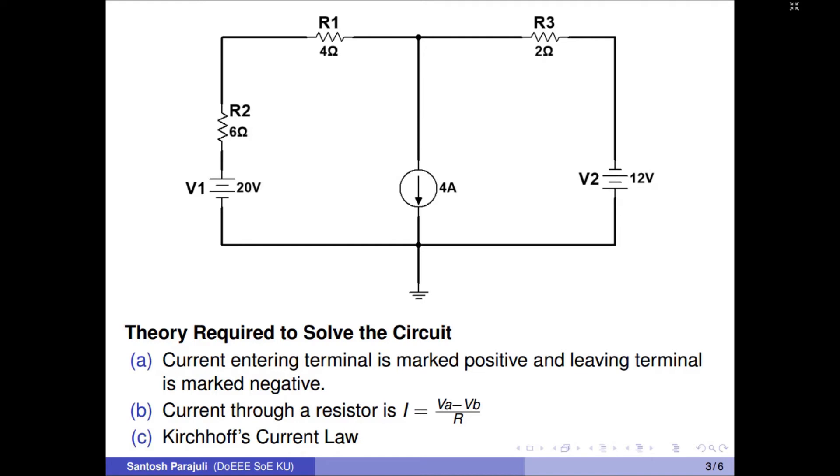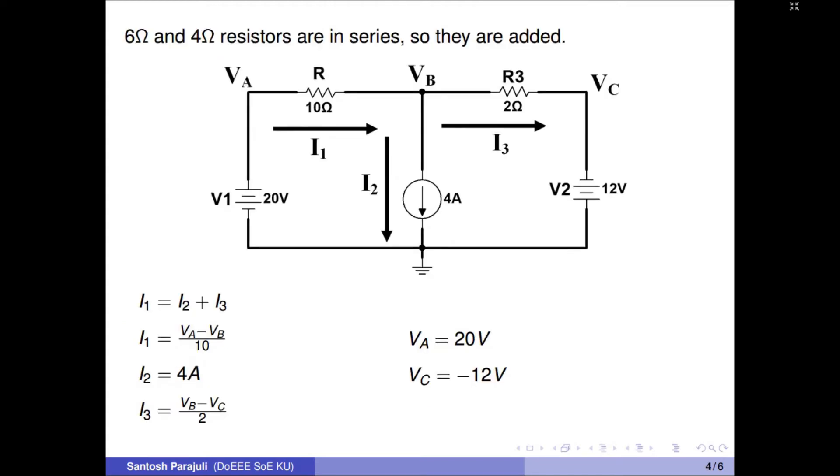Third, sum of entering currents at a node is always equal to sum of outgoing currents through that node. Here, I1 is equal to I2 plus I3.